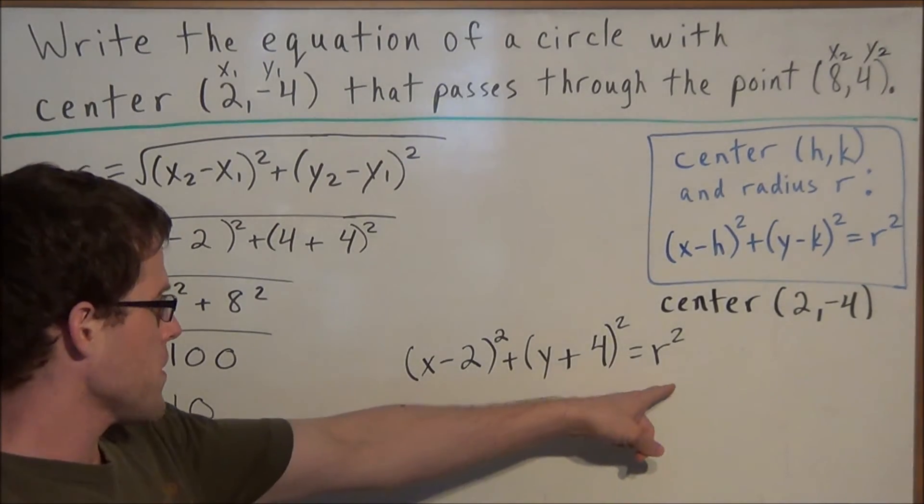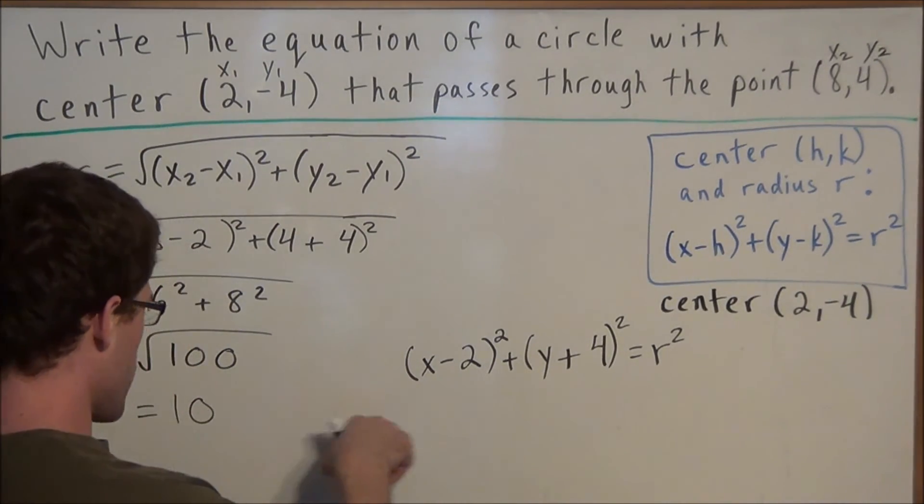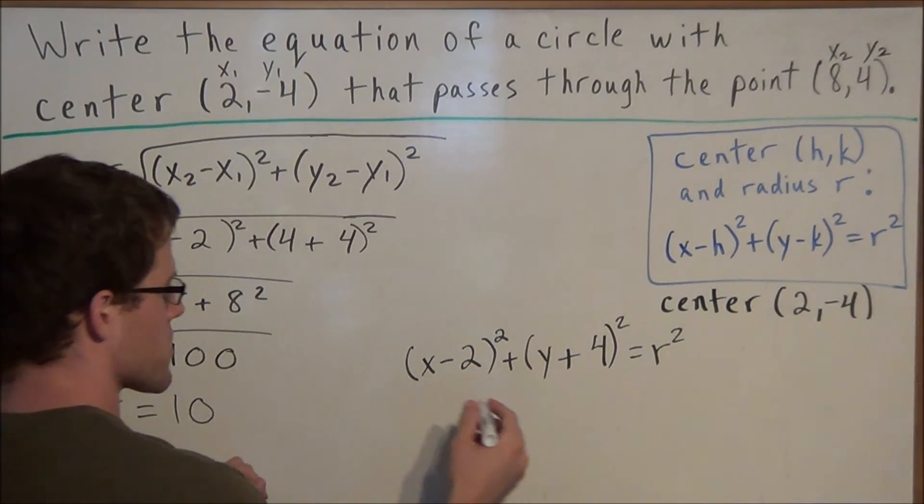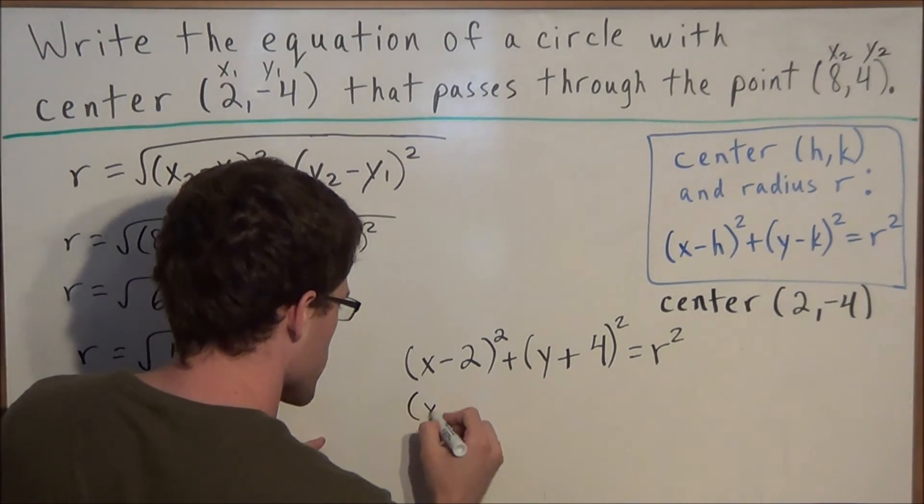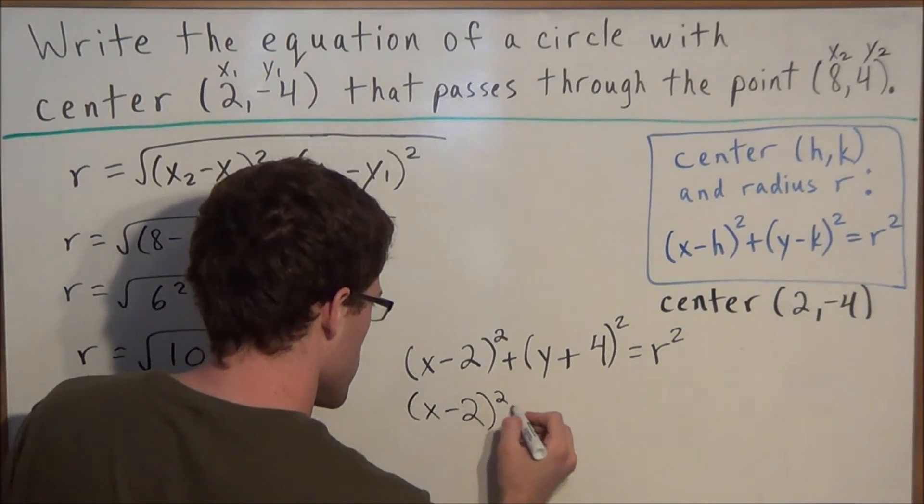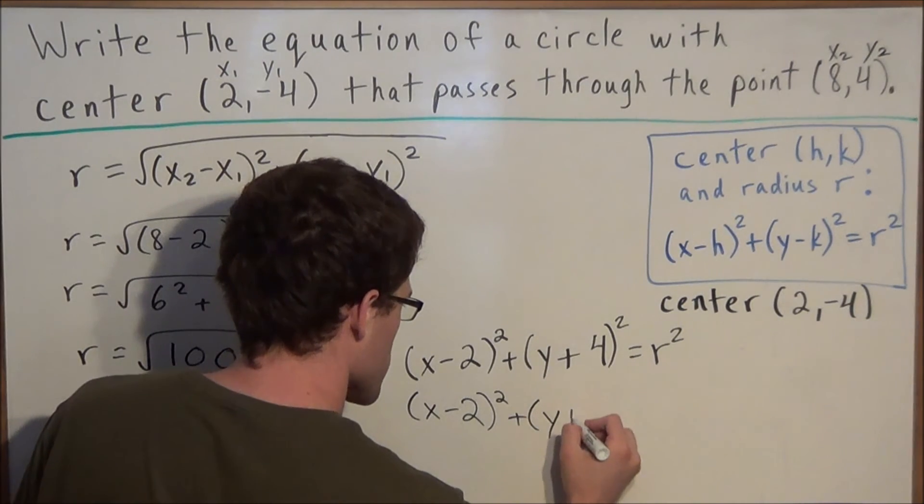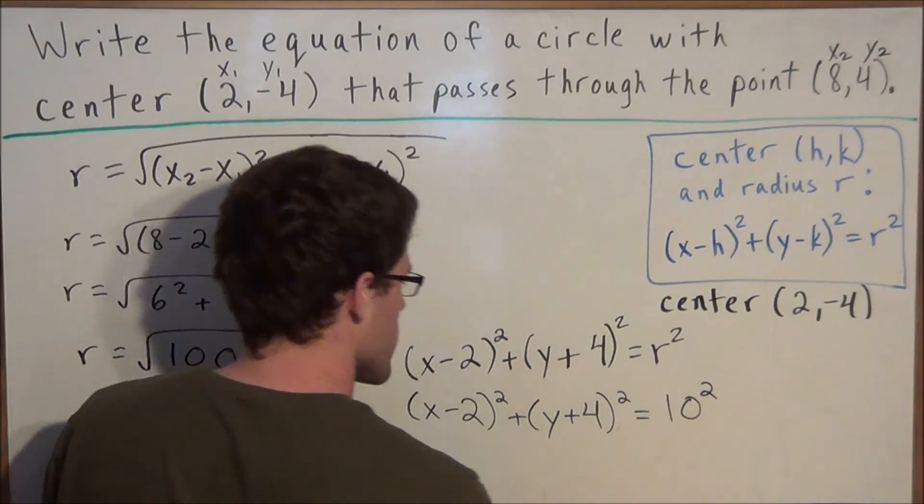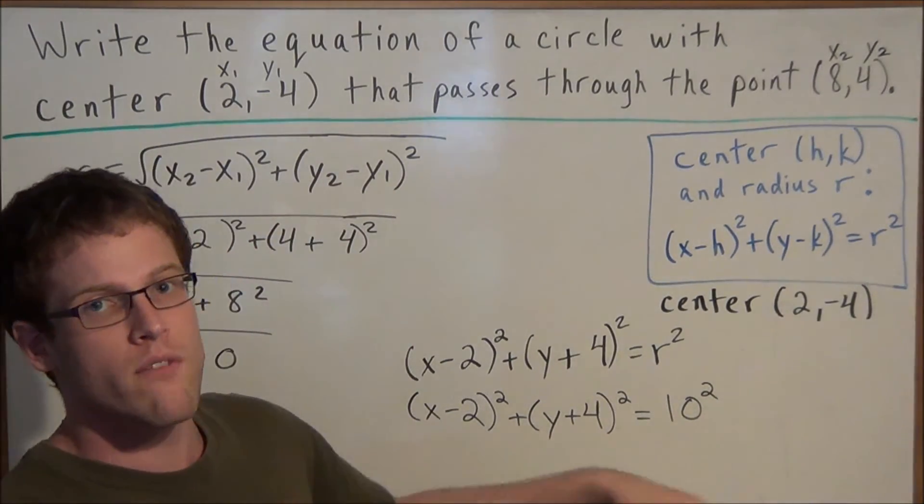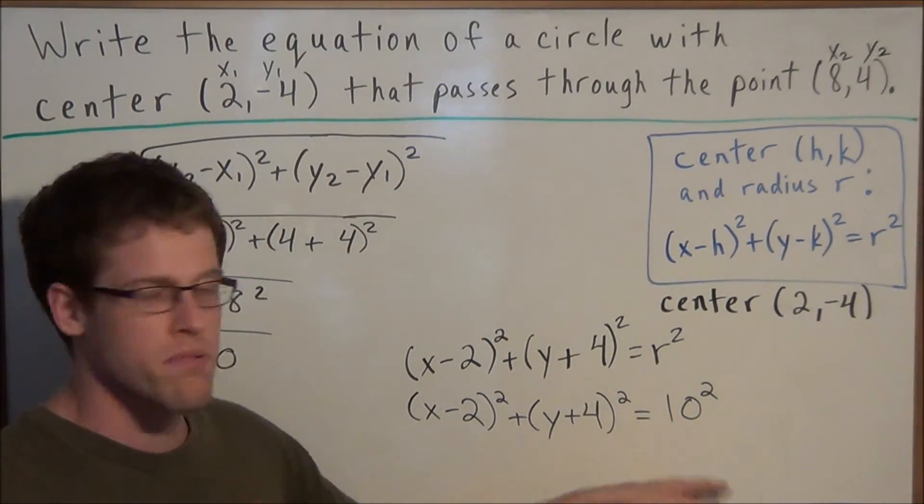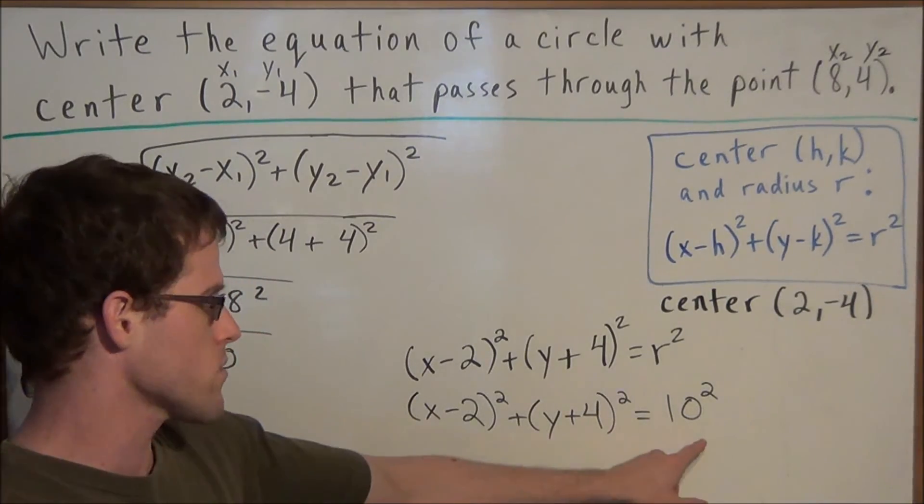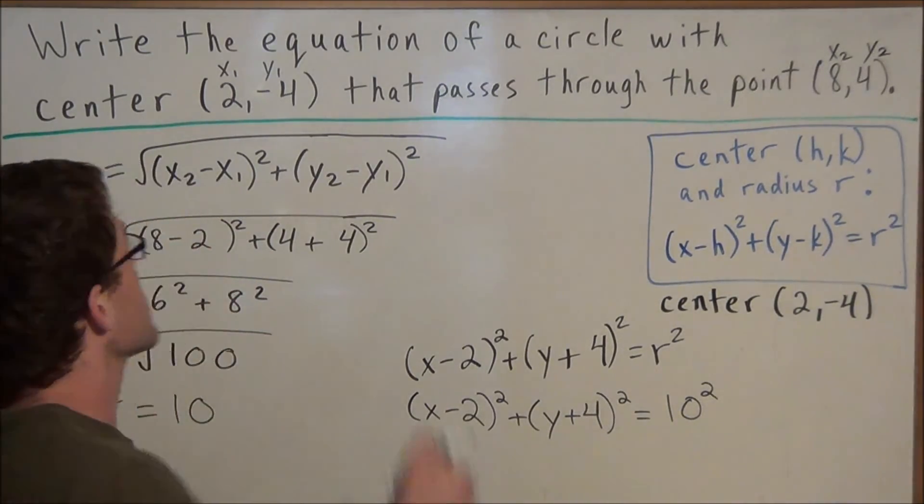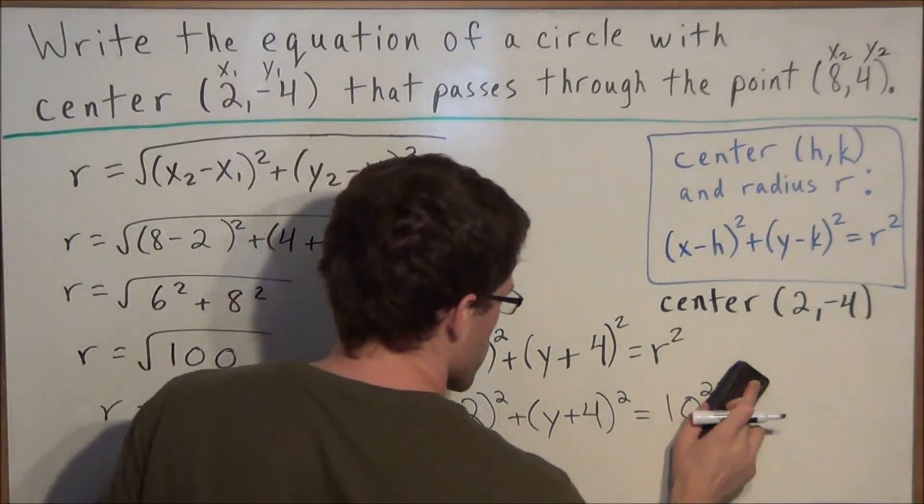So then for this step here, notice for the next line of our equation we can replace the radius with 10. We've got X minus 2 squared plus Y plus 4 squared is equal to 10 squared here like this. And then remember you want to simplify this because you're plugging in an actual number since the radius is equal to 10. We're doing 10 times 10 and 10 times 10 is 100.